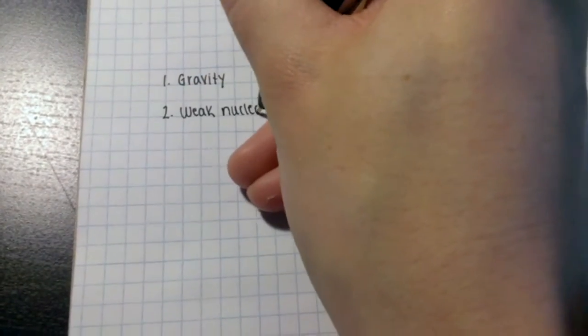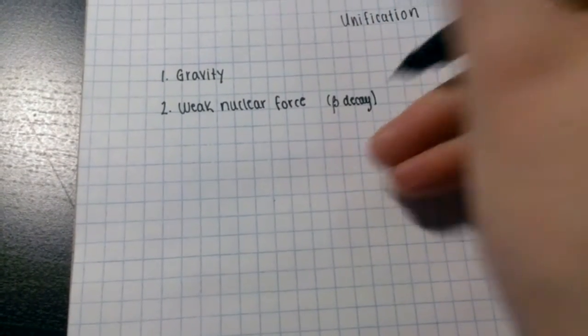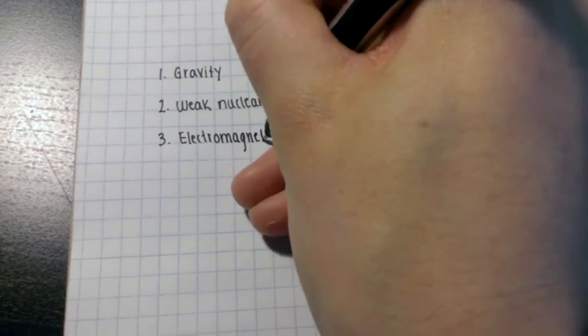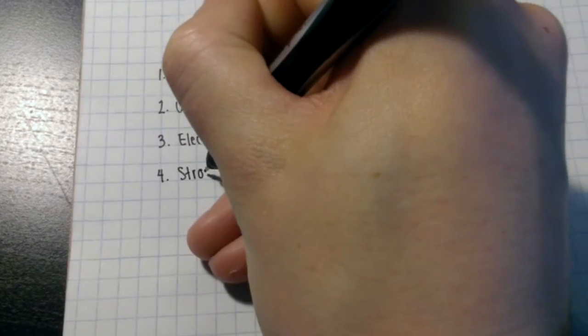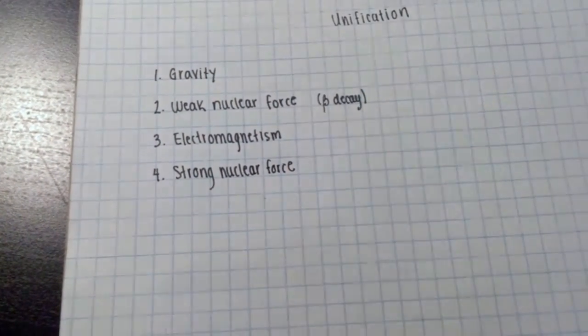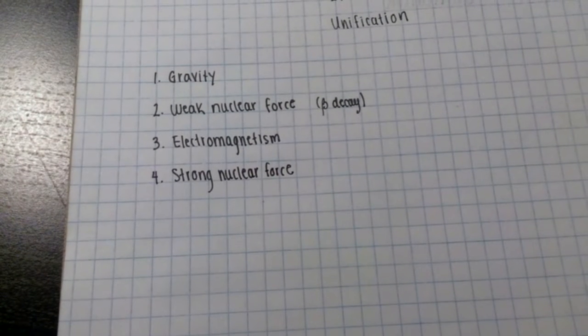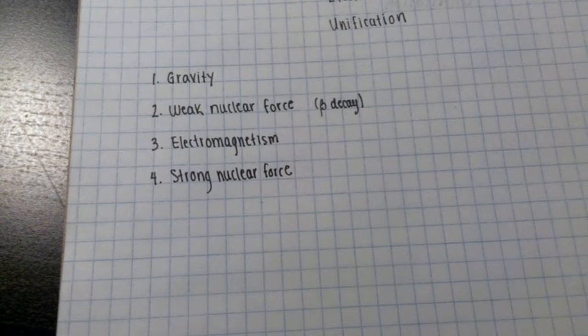Then you have the weak nuclear force, which is responsible for radioactive beta decay. There is also electromagnetism that acts on the electric charge of particles, as well as the strong nuclear force that acts on the atomic nuclei to hold protons and neutrons together, or at an even more fundamental level, that acts on quarks and changes one of their properties called color.